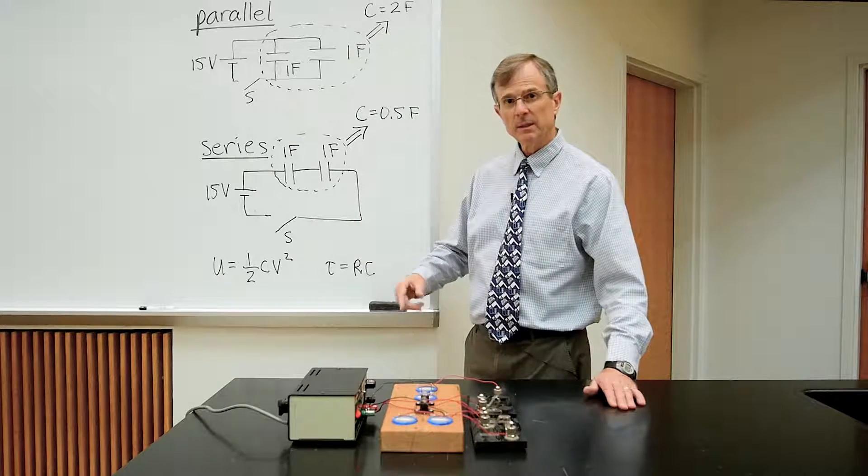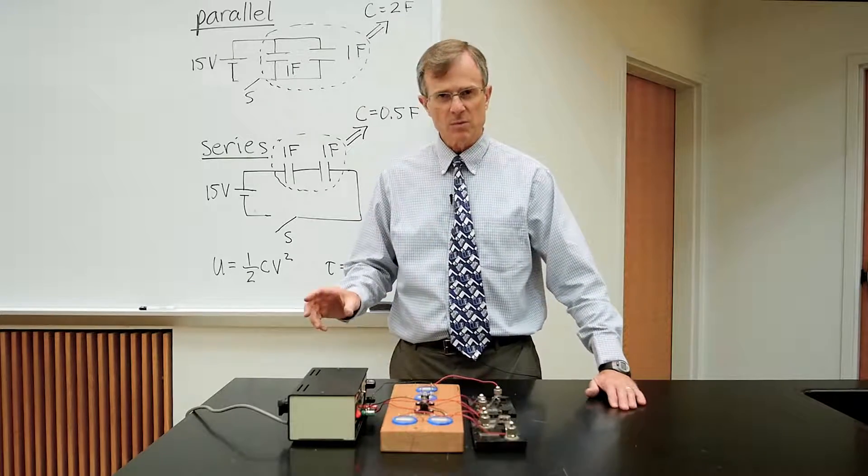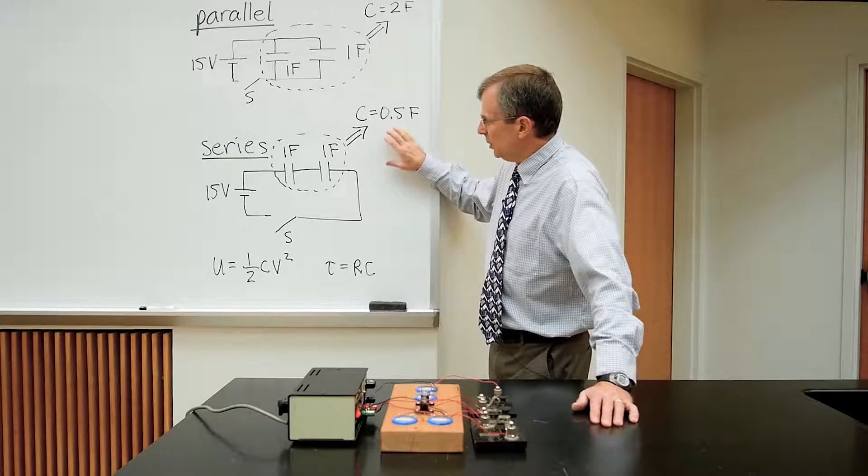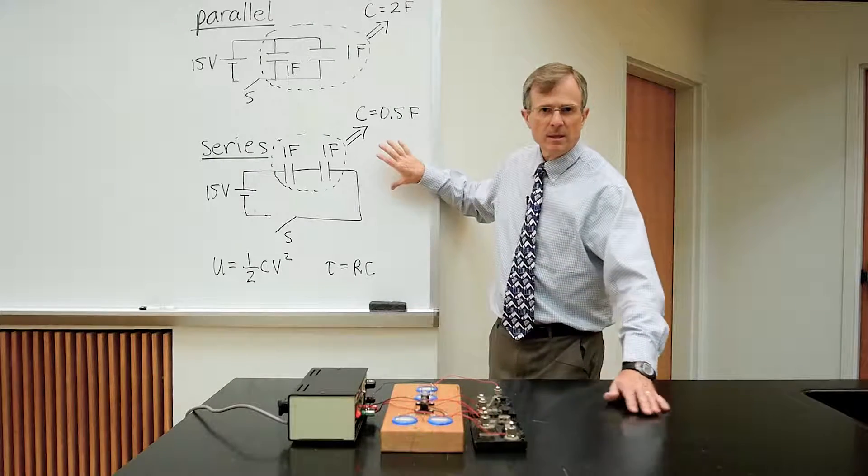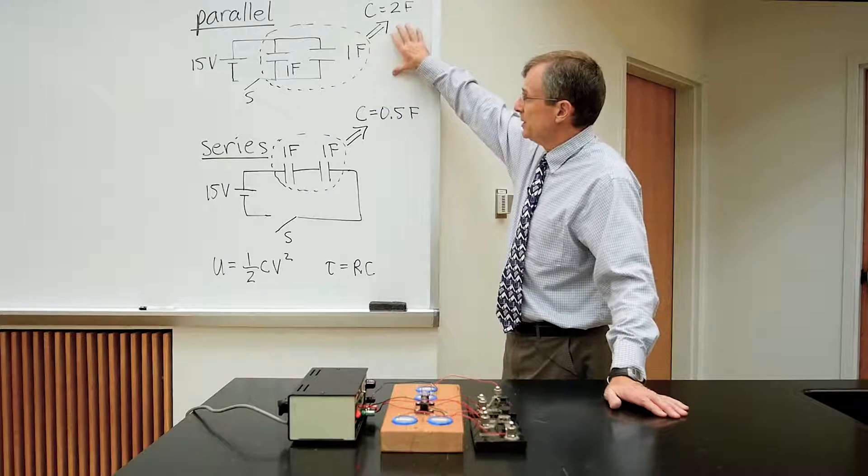1 over 1, plus 1 over 1, equals 1 over the equivalent capacitance. 1 plus 1 is 2, 1 over that is a half. So the equivalent capacitance here is less for the series than it is for the parallel.